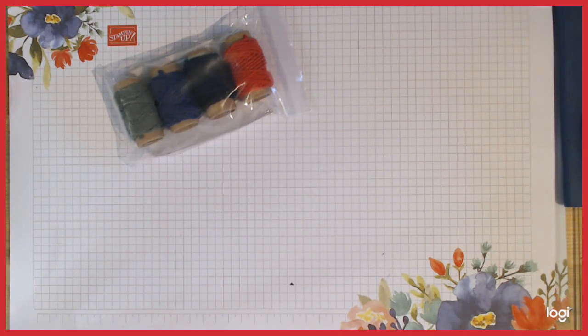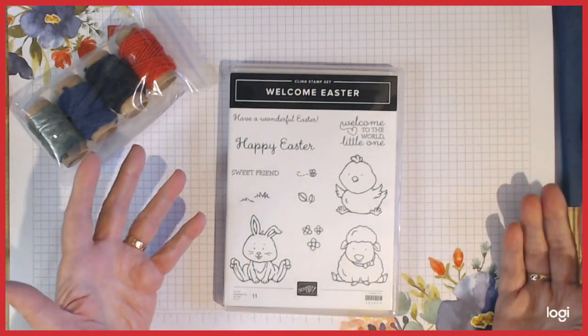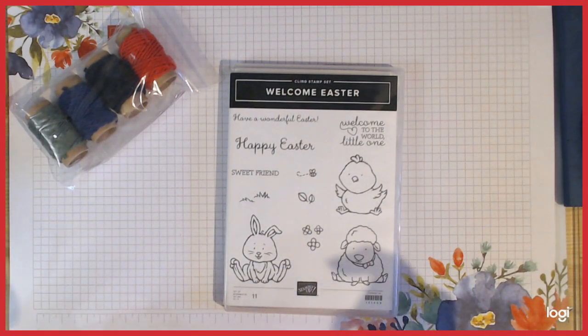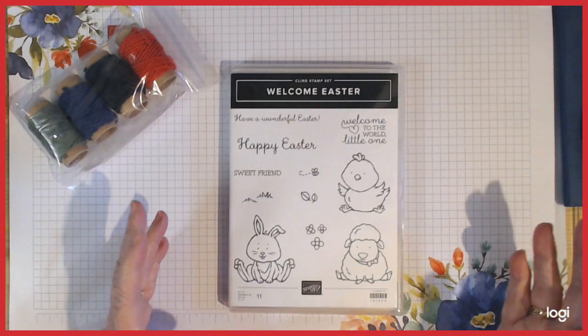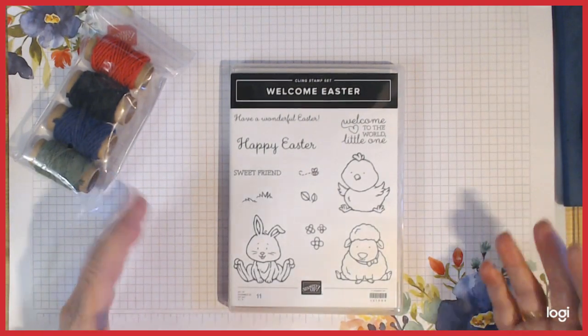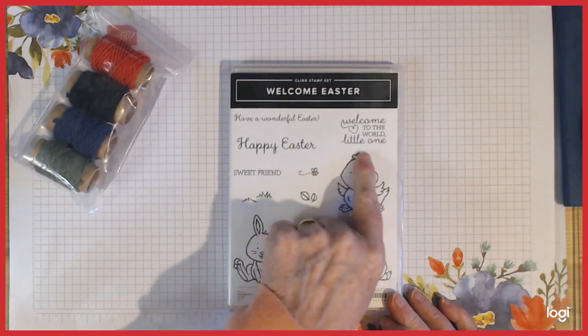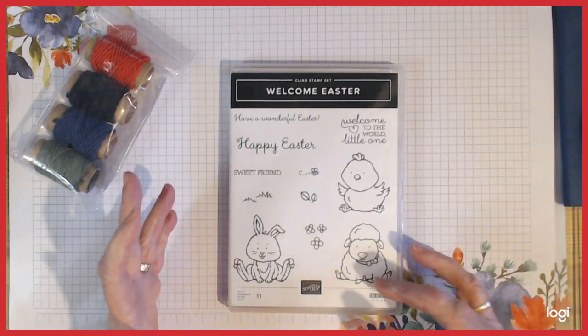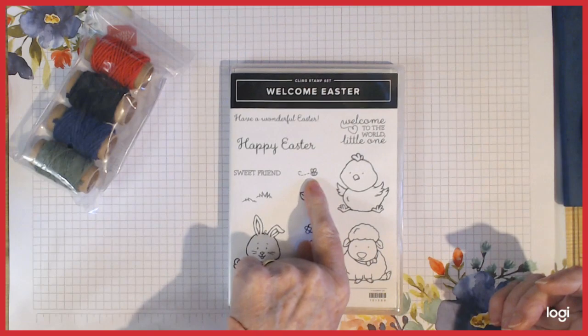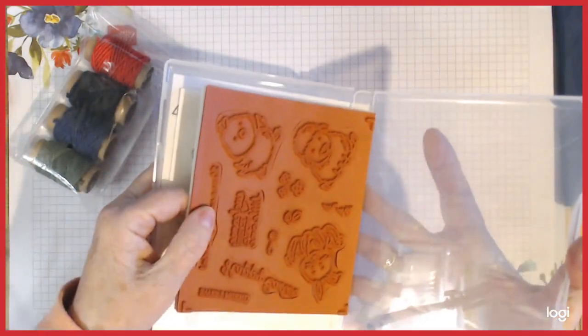The second one that I got is this Easter one. I know I'm thinking real ahead, but I have grandkids and I like to make them little Easter treats. I also like to do lots of video Easter treats, so this is going to work out perfect for me. I know, weird choices, but that's the glory of Stampin' Up - you can choose what suits you best. This one is just perfect: Welcome to the World, Little One - so perfect for bunnies or sheep for a new baby. Have a Wonderful Easter, Happy Easter, Sweet Friend, and even a tiny bee. I have a couple other sets ordered, but this is great.